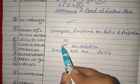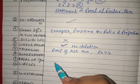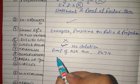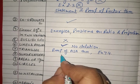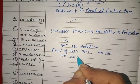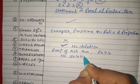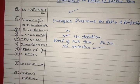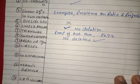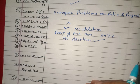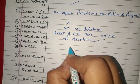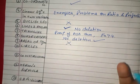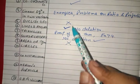Chapter 8, Quadrilaterals, you need to do completely — it is a very important chapter with no deletion. Areas of Parallelograms is a very lengthy chapter, and the good news is that this whole chapter is deleted; no need to do anything. This whole chapter is deleted.